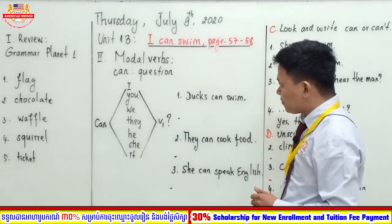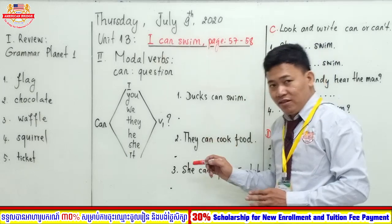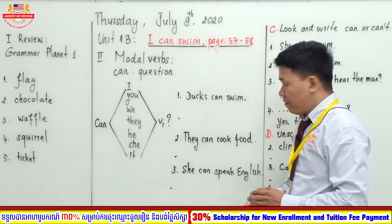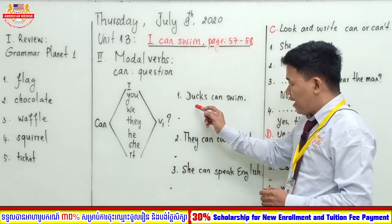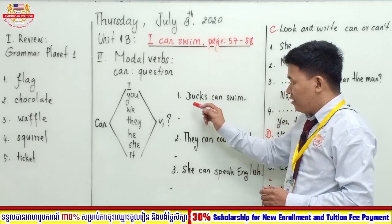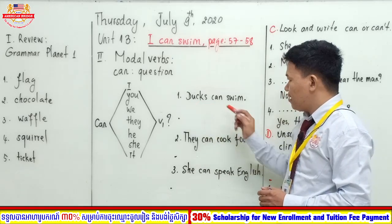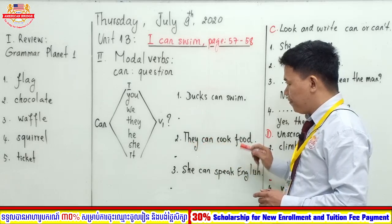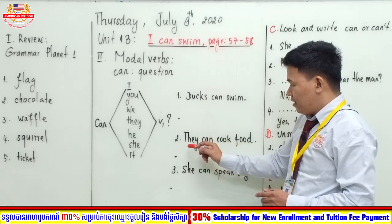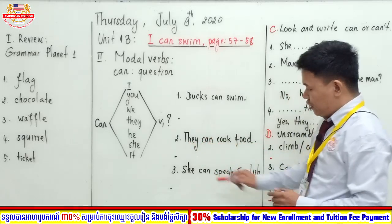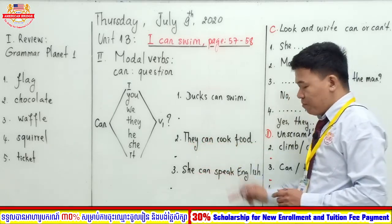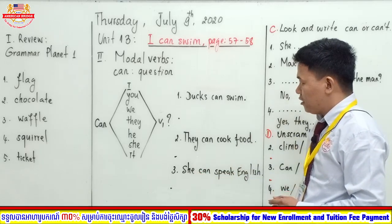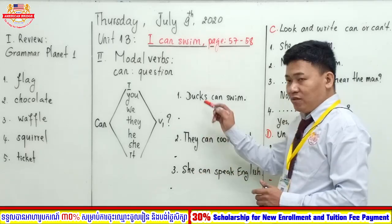These are the example sentences. Please read with me: 'Ducks can swim.' 'They can cook food.' 'She can speak English.' These are the affirmative forms — how to use 'can' in affirmative form.